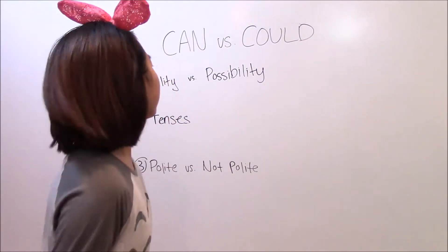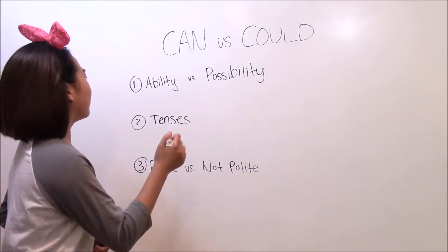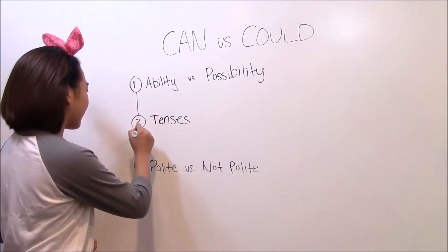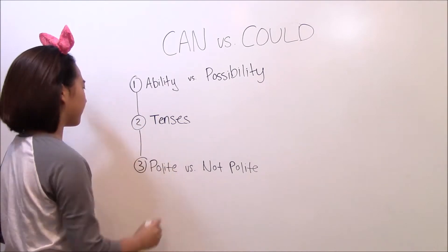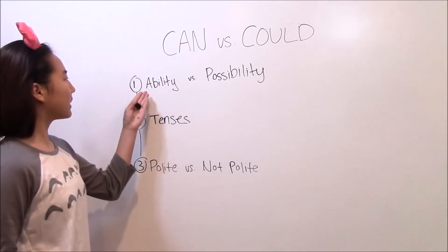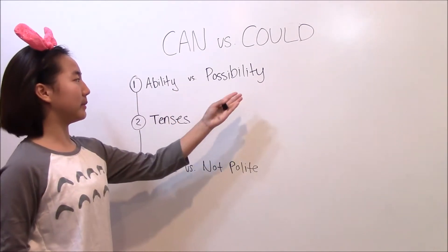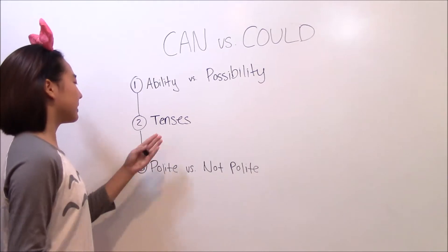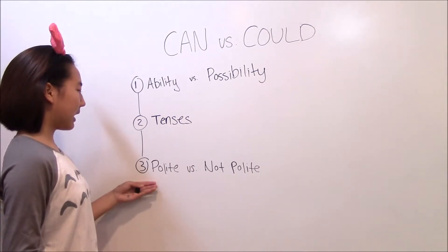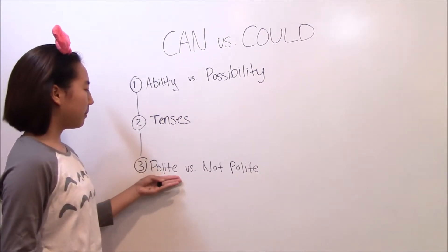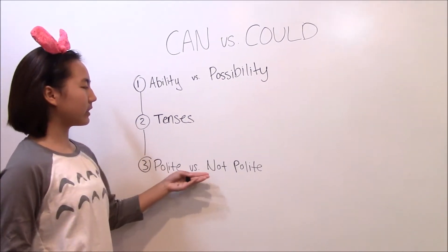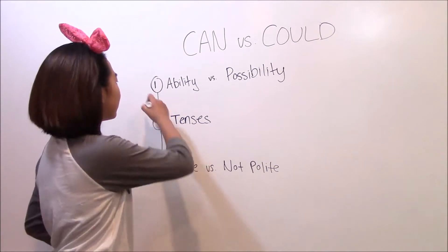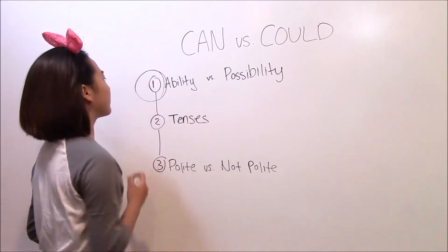There are three main ways that can and could differ. Firstly, ability versus possibility. Secondly, tenses. And lastly, being polite versus being not polite. And so I'll start with the first one.